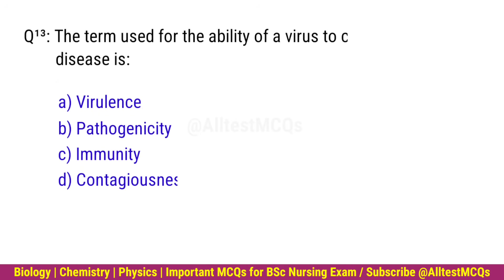Q13. The term used for the ability of a virus to cause disease is? Right option is A. Virulence.